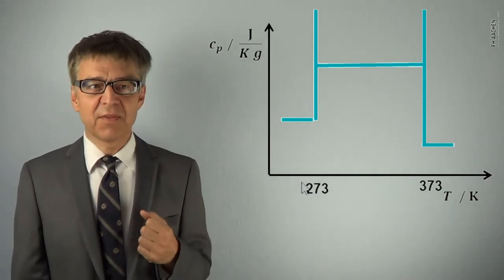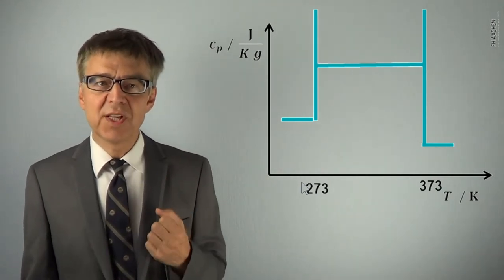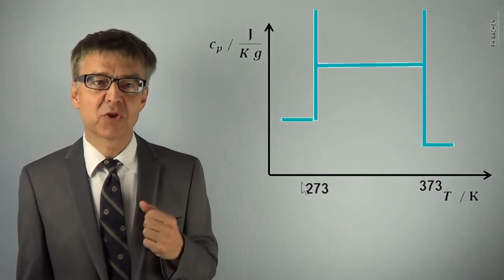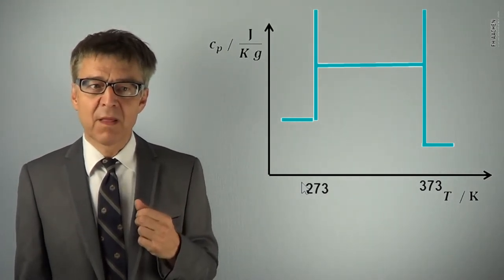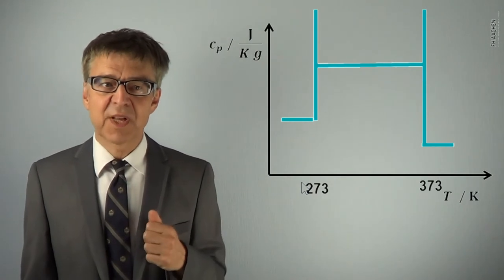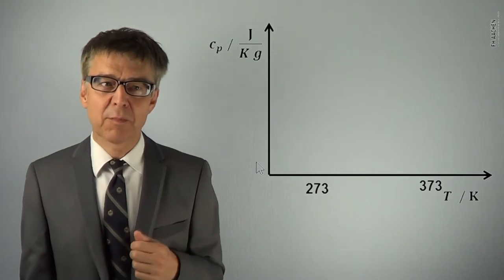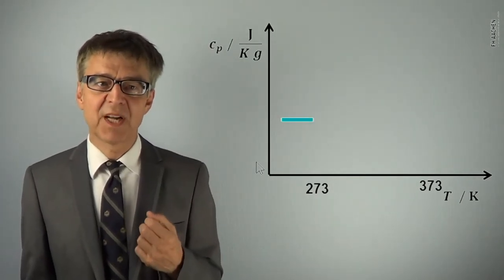By differentiating the just seen QT diagram, we get a plot of heat capacity as a function of temperature. This plot is extended to negative Celsius temperatures. Solid water has a specific heat capacity of about 2J per gram and Kelvin.